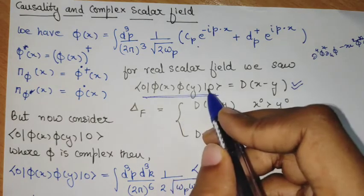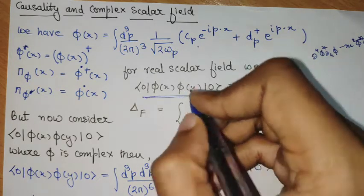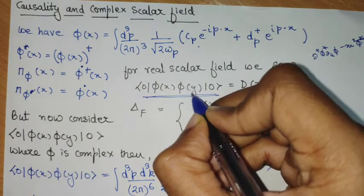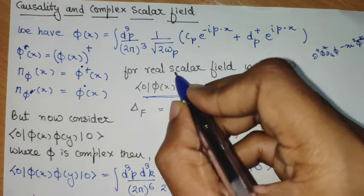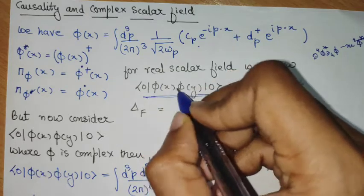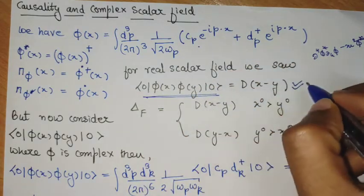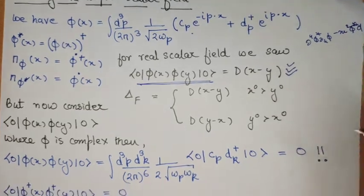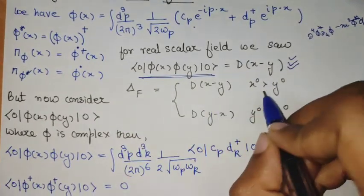So the propagator created a state in the y and then there is a propagation from y to x. What is the amplitude corresponding to that propagation is captured by this propagator. And we saw that the Feynman propagator was of this form.